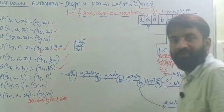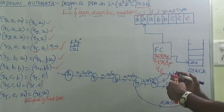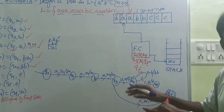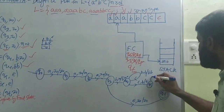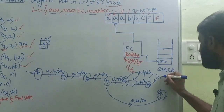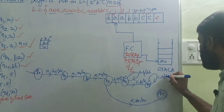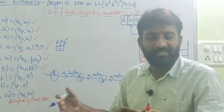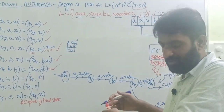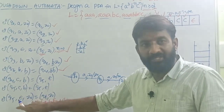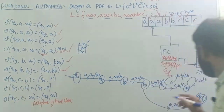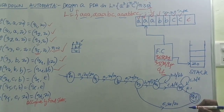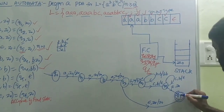On Q5, we can read one more C — if reading one more C, the top of stack has one more B. Do the pop operation and remain on the same state Q5 — self-loop with label C, B / epsilon. When all C's are exhausted in Q5 state, input is empty (epsilon) and top of stack is Z-naught. We simply move to the final state without doing any other operation.